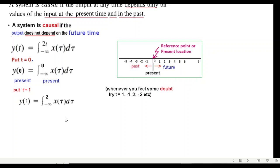Now this we can split to make it more clear, so minus infinity to 1 and then 1 to 2. Now we are at 1 at this point, and so the input is from minus infinity to 1, this is fine. This is past and present, this is past and present, but this from 1 to 2 is the future value, this is future value.